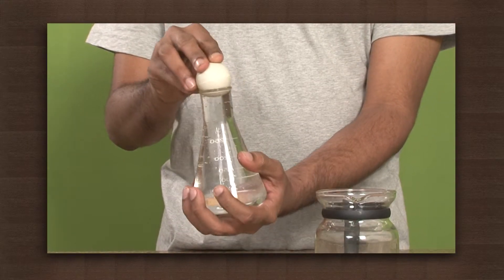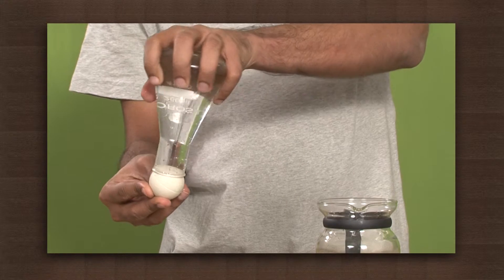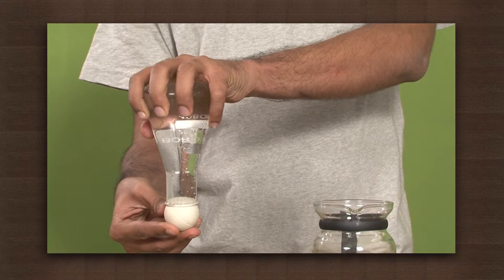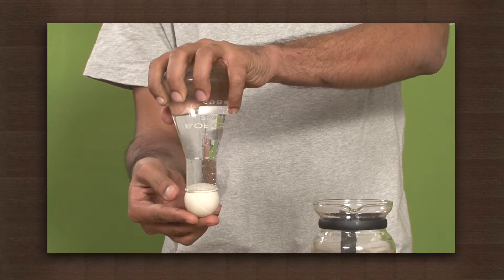Keep your finger on the ball and invert the flask. Make sure the water does not spill out of the flask. Now slowly release the finger from under the ball as you keep the flask inverted.